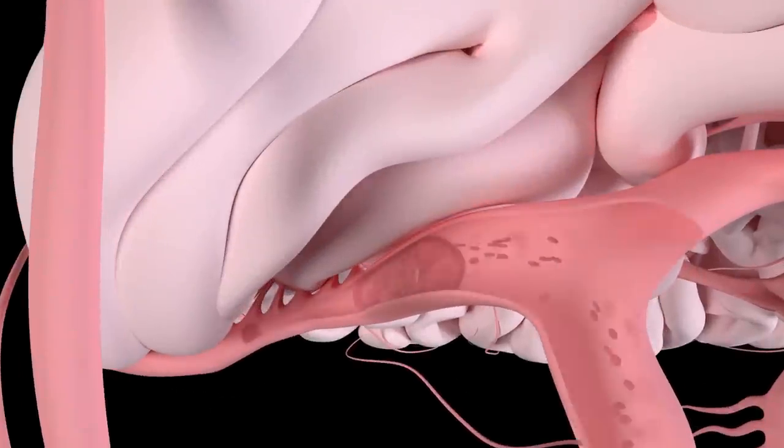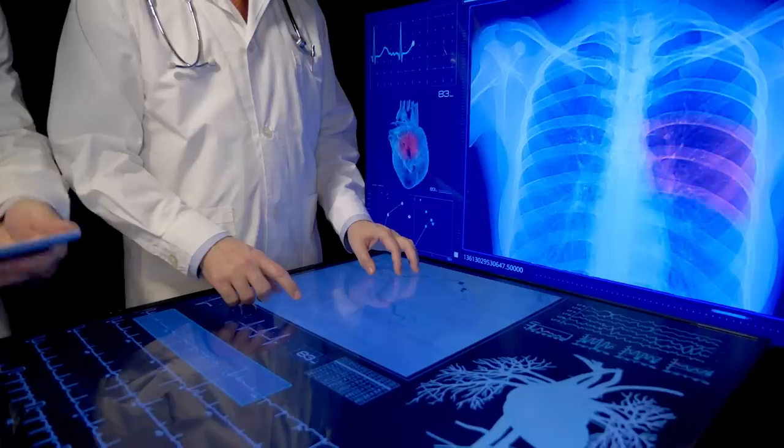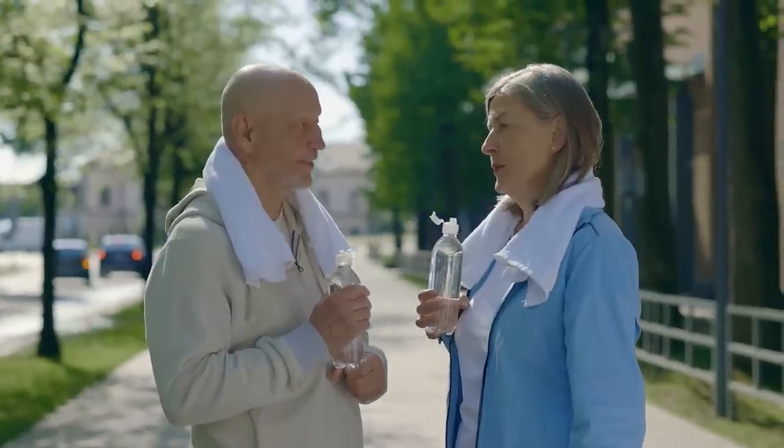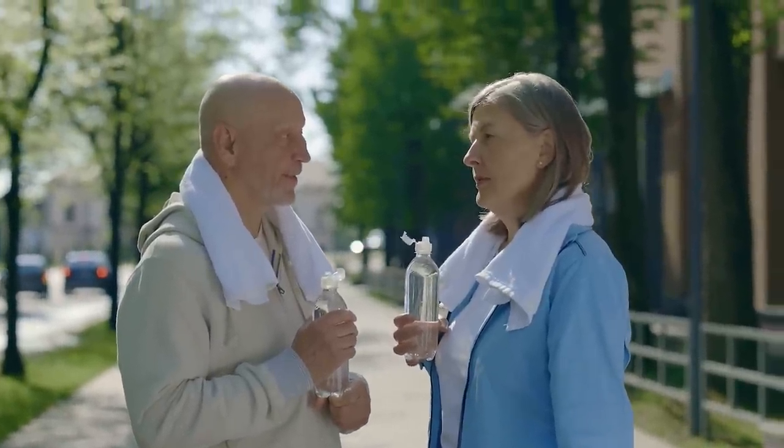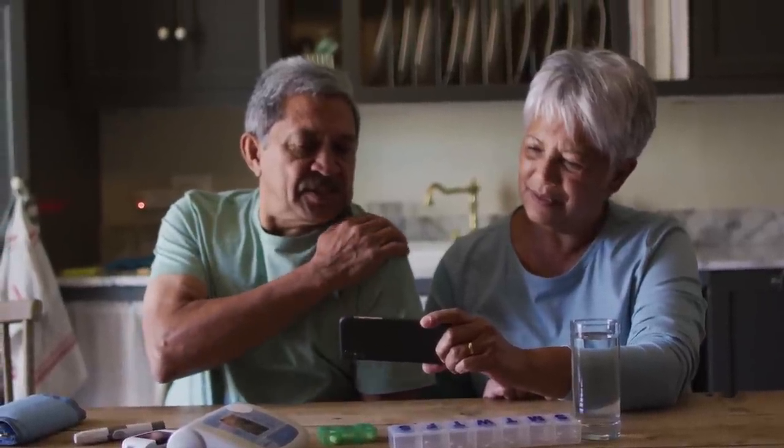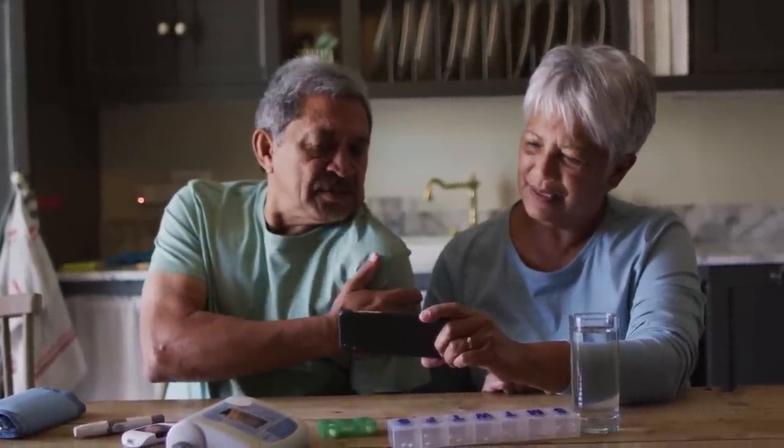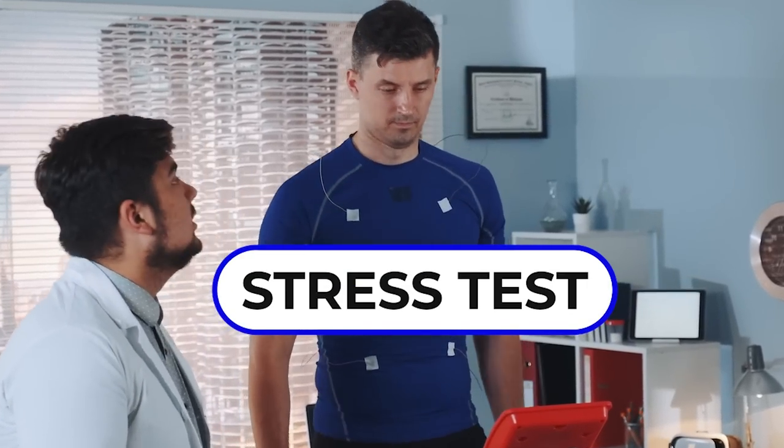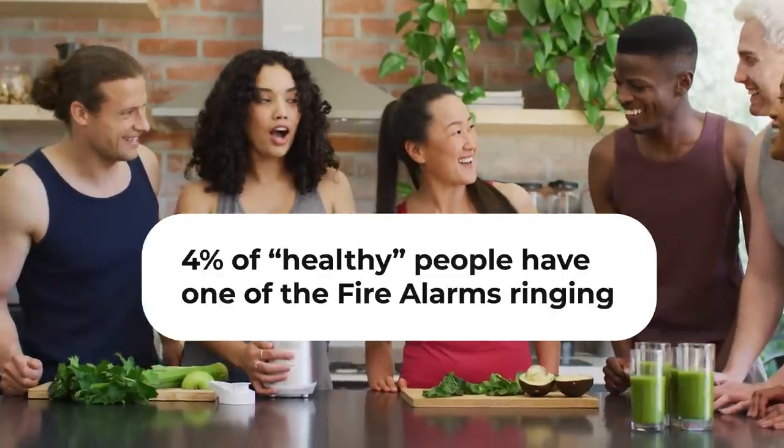And if it happens to be a brain artery, stroke is the risk. If it happens to be a heart artery, heart attack is the risk. And guess what? Four percent of healthy people have one of the two fire alarms ringing, which means 8% of people, one out of 12, the folks that are watching me right now, one out of 12 of you has one or the other of the fire alarms ringing. And it's not been detected on any other tests that you've done. It certainly doesn't show up on a stress test. That's why that's a myth about stress testing. But four percent have one or the other.